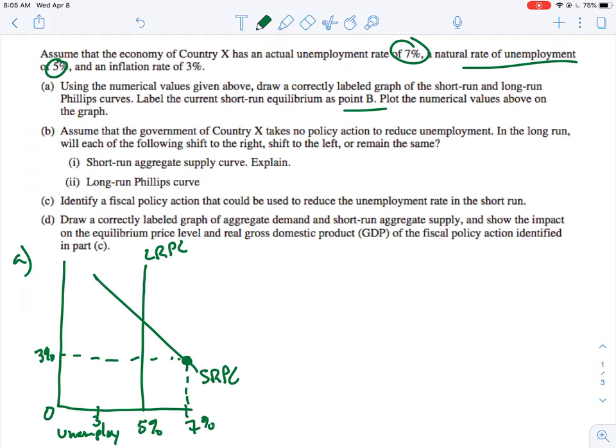So we have to put the actual rate of unemployment, and then the inflation rate that's got to correlate to is over here at 3%. So 7% and 3%. And I believe we're supposed to label this point B. So you've got the numerical values, you've labeled the point B, so you are done with A.